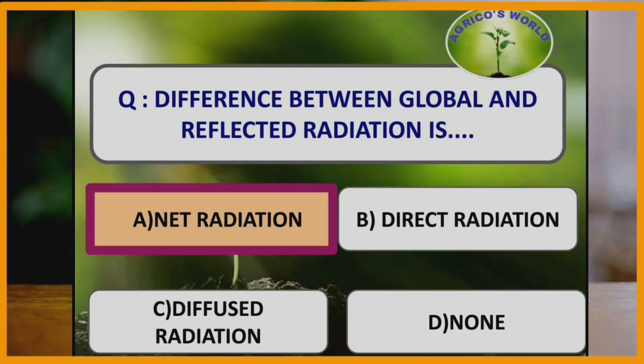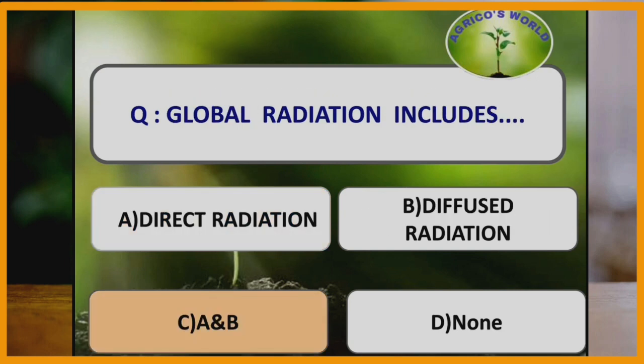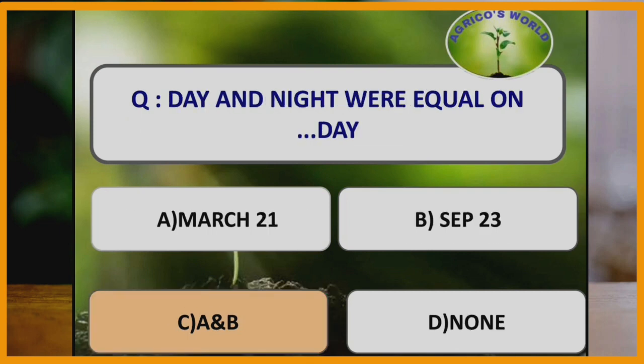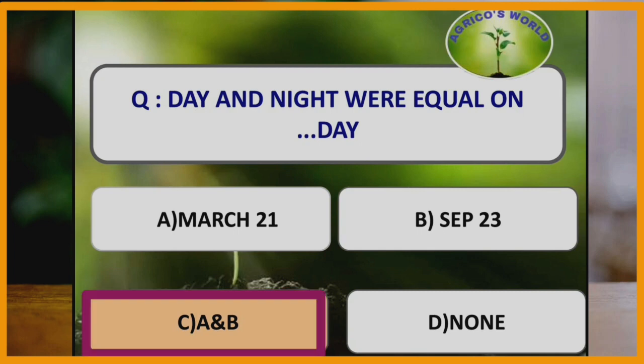Radiation observed before sunrise and after sunset is diffused radiation. The difference between global and reflected radiation is net radiation — net radiation means global radiation minus reflected radiation. Global radiation includes direct radiation and diffused radiation.